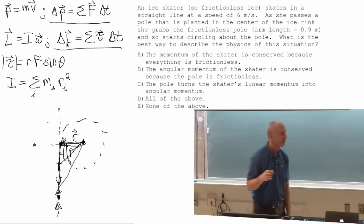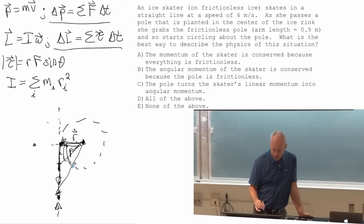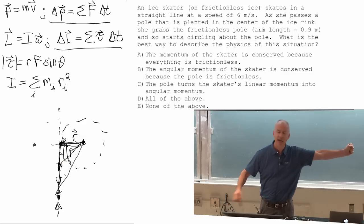Does she never have translational momentum? She has translational momentum before she grabs the pole and she has it afterwards. But afterwards, she's circling around, so it's changing all the time. Her momentum is constant until that force of the pole starts making it change.